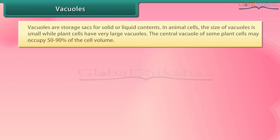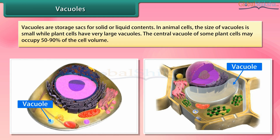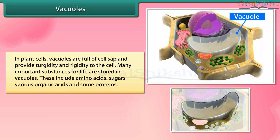Vacuoles: Vacuoles are storage sacks for solid or liquid contents. In animal cells the size of vacuoles is small, while plant cells have very large vacuoles. The central vacuole of some plant cells may occupy 50 to 90 percent of the cell volume. In plant cells, vacuoles are full of cell sap and provide turgidity and rigidity to the cell. Many important substances for life are stored in vacuoles, including amino acids, sugars, various organic acids, and some proteins.